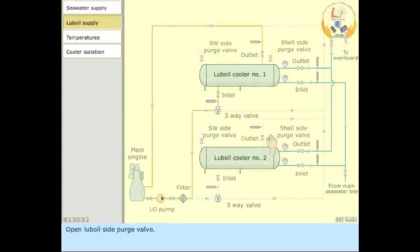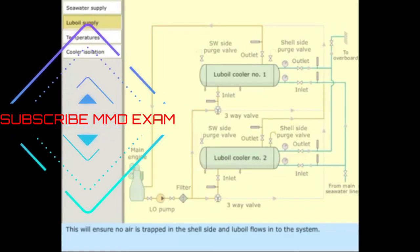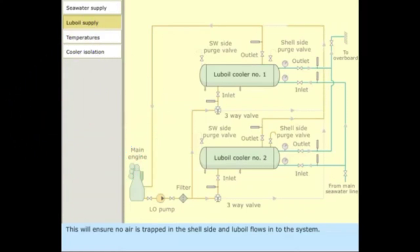Open lube oil side purge valve. Open the lube oil inlet valve by one turn. When the lube oil comes out of the purge valve, open the lube oil outlet valve gradually to full open position. This will ensure no air is trapped in the shell side and lube oil flows into the system. Close the purge valve. Open the inlet valve fully.